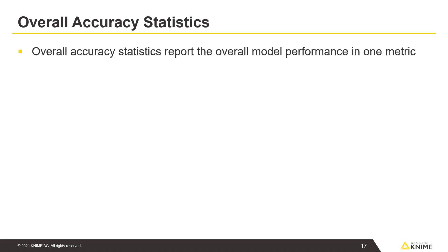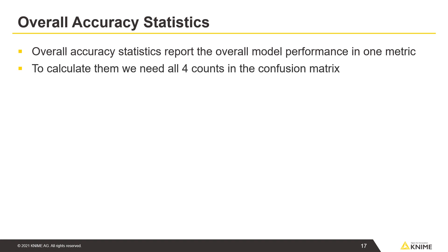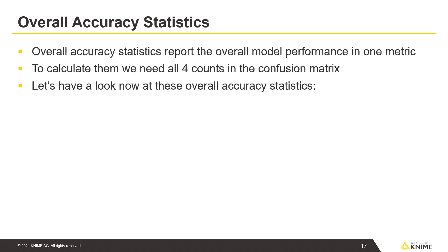Overall accuracy statistics report the overall model performance in one metric. To calculate them, we need all four counts in the confusion matrix. Let's have a look at these overall accuracy statistics: overall accuracy, overall error, and Cohen's kappa.